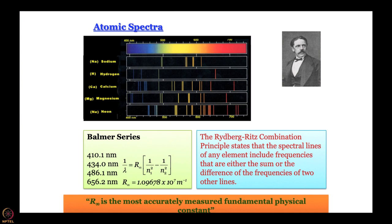This is known, and different series of lines were observed - we will mainly focus on the hydrogen emission spectrum. The five series of lines that were found were Lyman, Balmer, Paschen, Brackett, and Pfund, and for each of these n₁ was constant and n₂ varied. The Balmer series was the one observed first because the values 410 nm, 434 nm, 486 nm, and 656 nm are all in the visible region, so they were observed by the eye. Then other lines were observed in other portions of the electromagnetic spectrum.